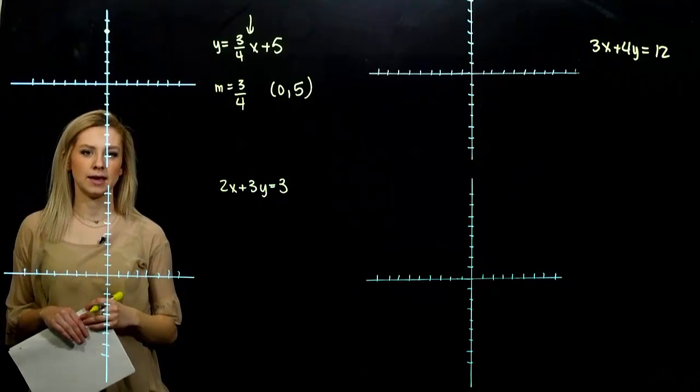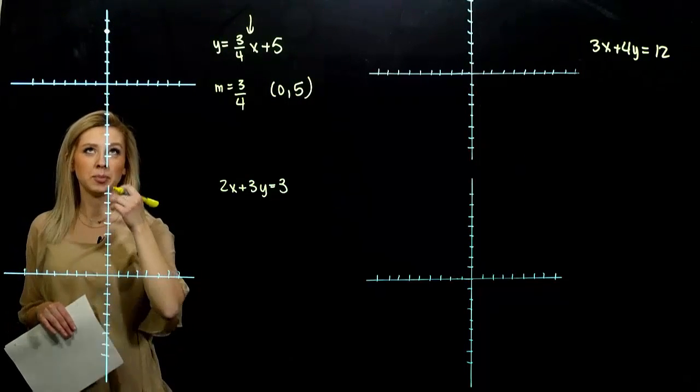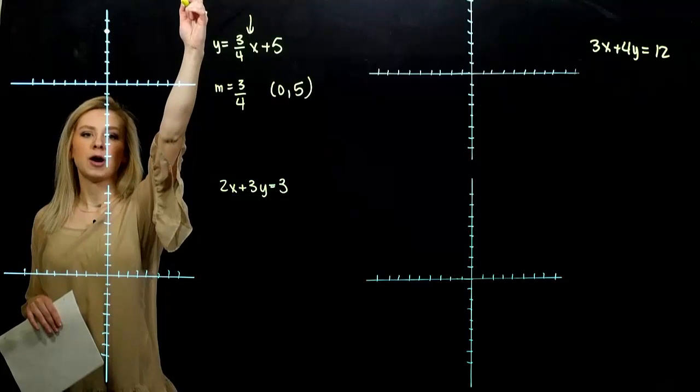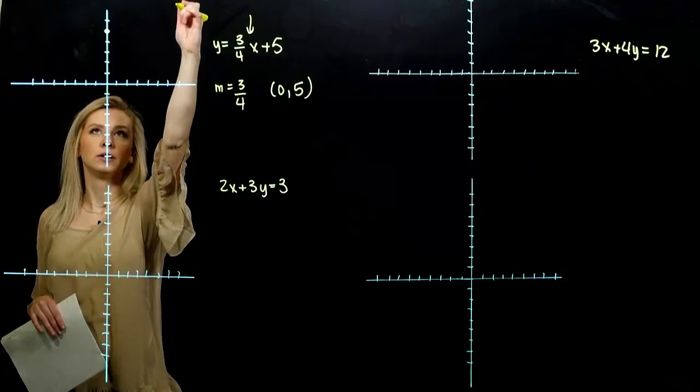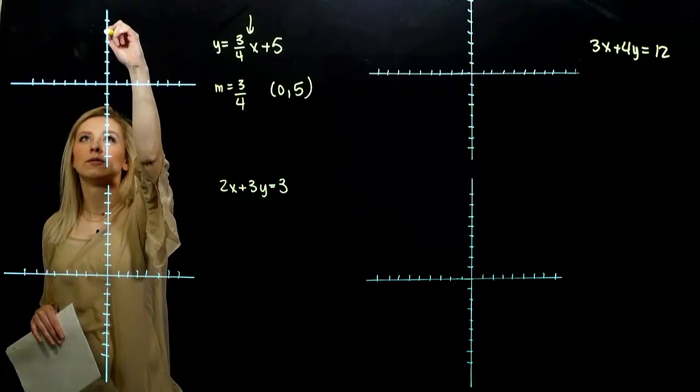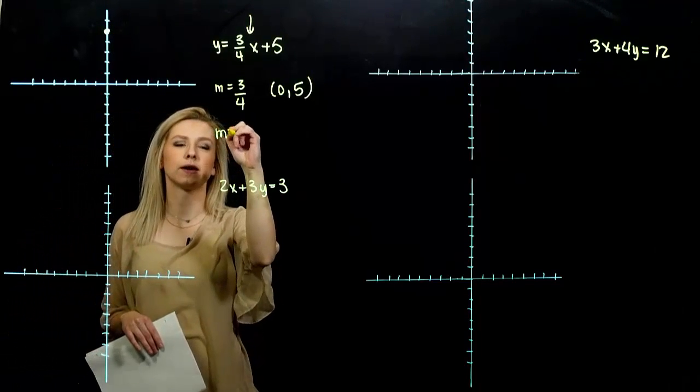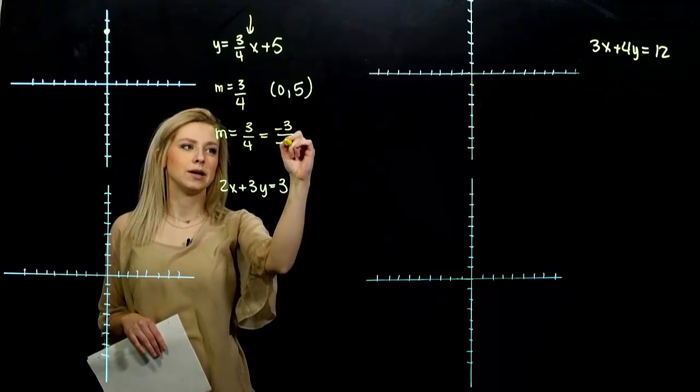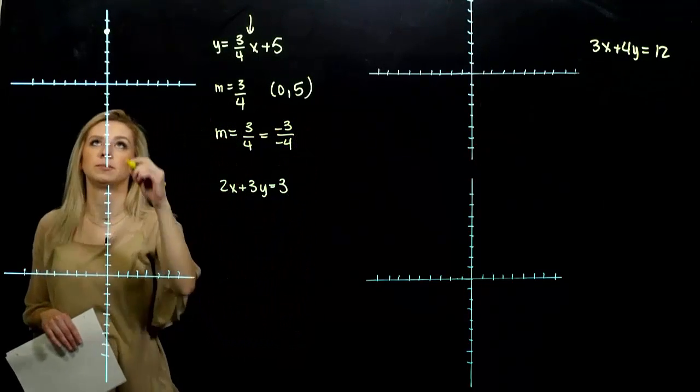And what's going to happen in this case? On my picture that's drawn, if I'm rising three, running four, I'm off my grid and out of frame. So what else can I do to graph this line? How else could I rewrite that slope?